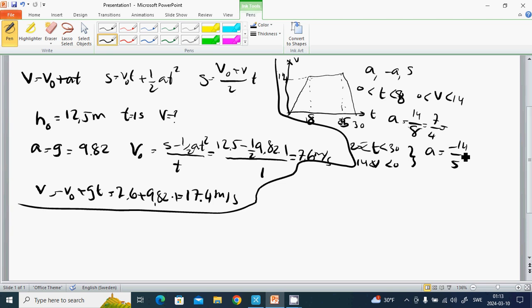For S, in this section S equals half VT, which equals 7 over 2 times 8, which is 56 meters. And here S is 14 times 5 divided by 2, which is 35 meters. Total S is S₁ plus S₂, which is 56 plus 35, which is 91 meters.